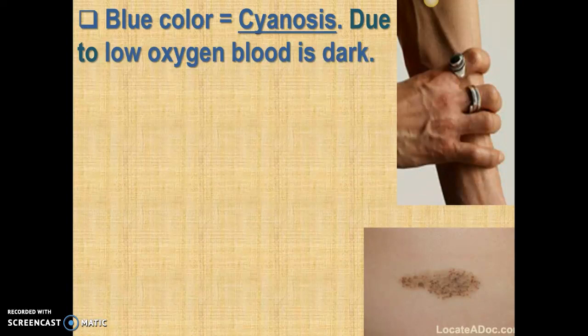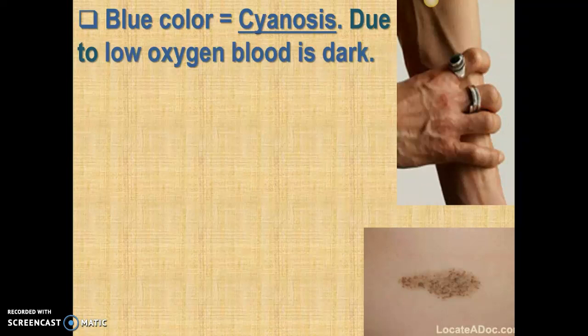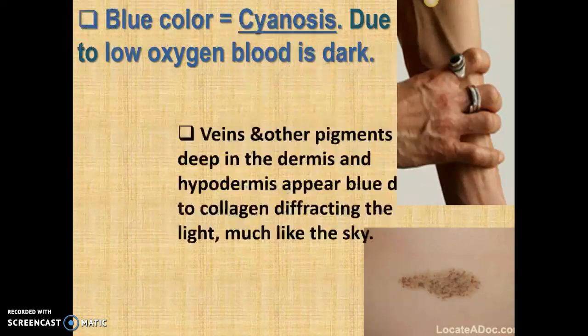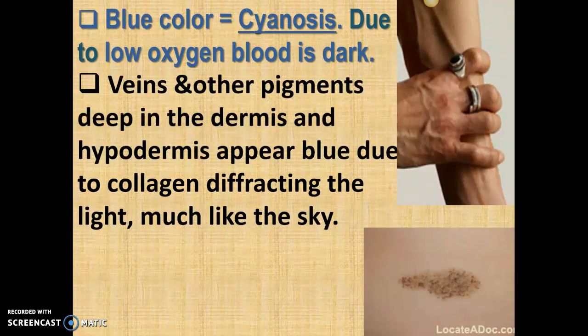You get a bluish color when you're cyanotic — cyan is blue, so cyanosis means a blue color. Due to lack of oxygen in the blood, your blood is no longer bright red; it's more of a burgundy, maroon color, like you see in vacutainers when they draw your blood. Our blood is not blue in the veins — it's a dark color when it's low in oxygen. That dark purplish burgundy color appears blue through the collagen fibers of the skin; your collagen diffracts the light.